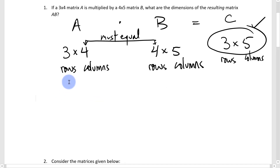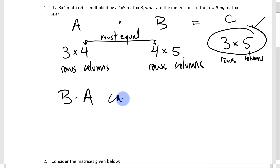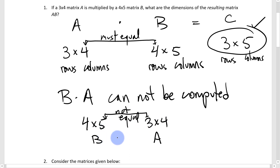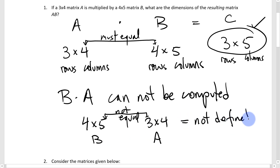Note that you could not multiply B times A in that particular order. B was a 4 by 5 and A is a 3 by 4, so the columns of B is not the same as the rows of A, and so it can't be done. The multiplication is not defined when the columns of the first and the rows of the second matrix aren't equal.